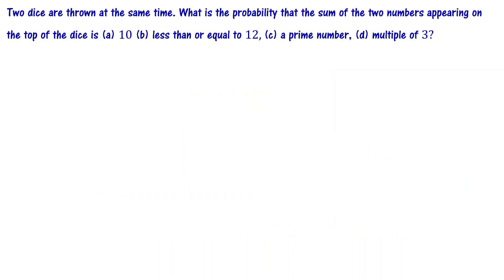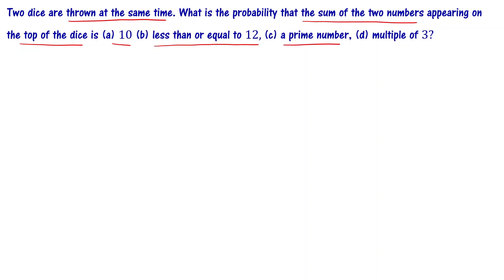Two dice are thrown at the same time. What is the probability that the sum of the two numbers appearing on top of the dice is 10, less than or equal to 12, a prime number, or a multiple of 3?